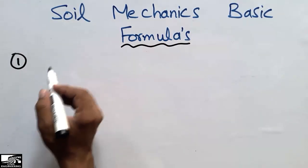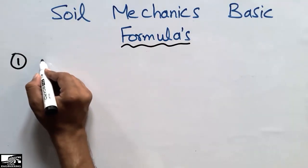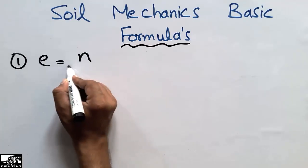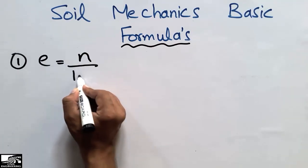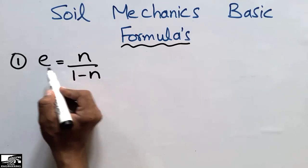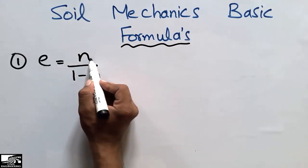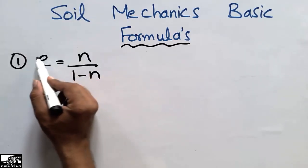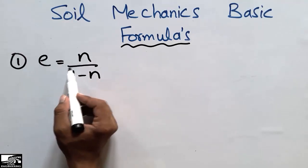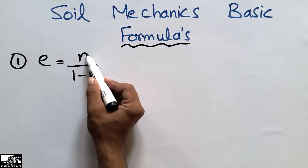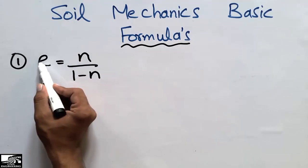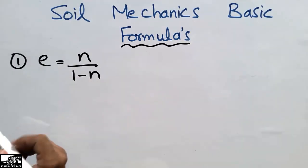The first formula used in soil mechanics is e = n / (1 - n), where e is the void ratio and n is the porosity. These are two different terms used in this formula. If the porosity is known to us, then we can find the void ratio.